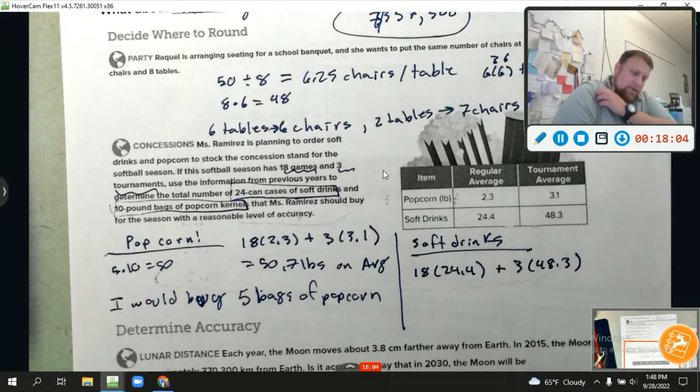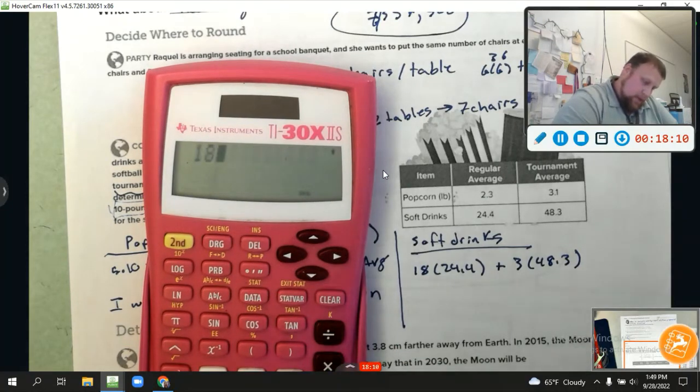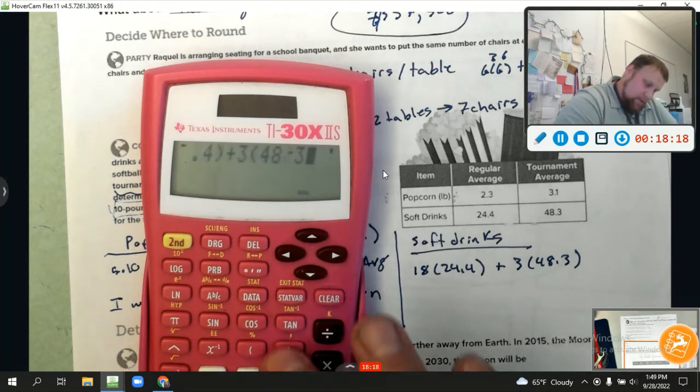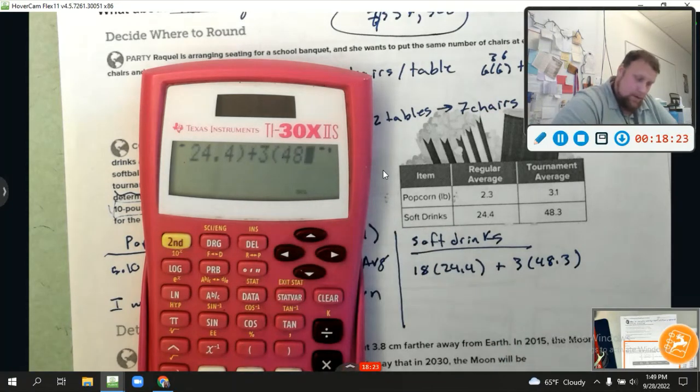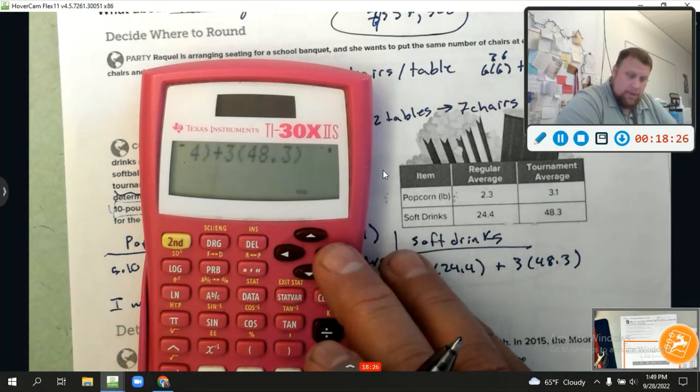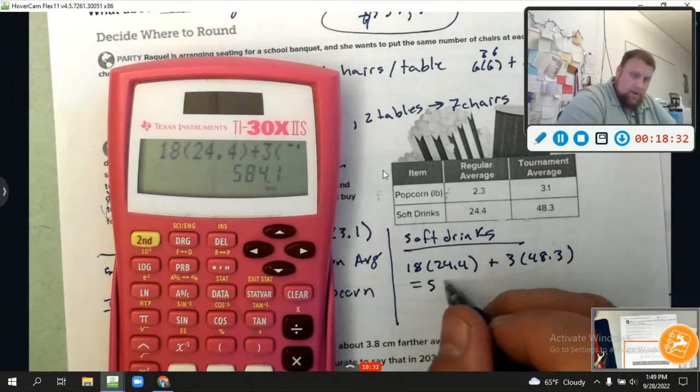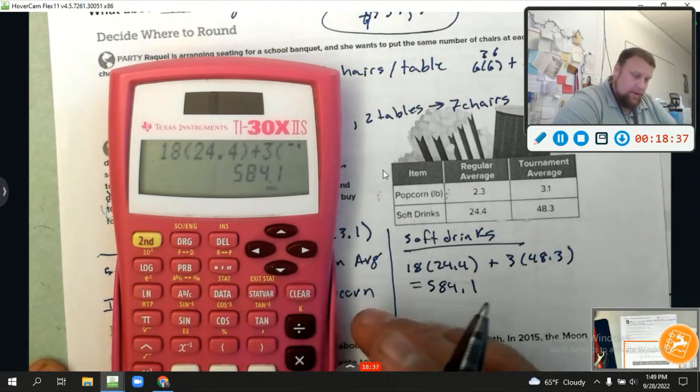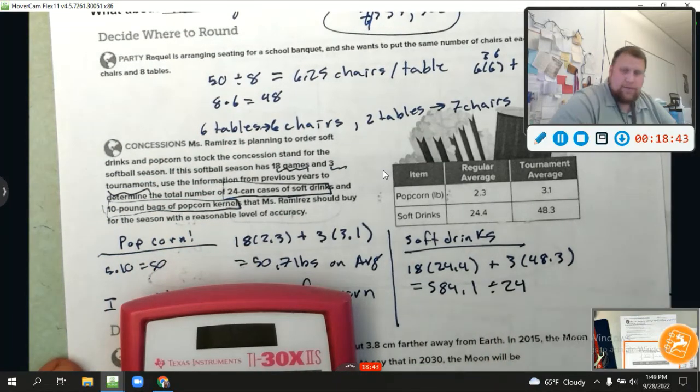Now, I'm going to take that 584.1 and I'm going to divide it by 24 cans of soda because there's 24 cans in each case. I need to know how many cases to buy. So divide that by 24. Look, that's about 24.3. Now, I would say that's a third over. I'm going to go ahead. Since that equals approximately 24.34. Okay. Then I'm going to go ahead and say I would buy 25 cases of soda.